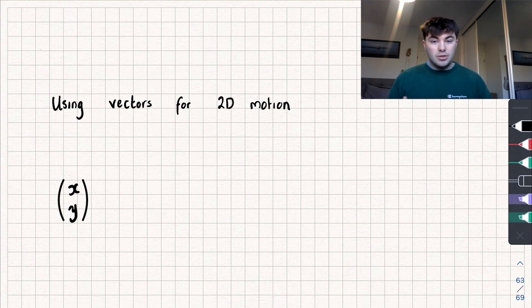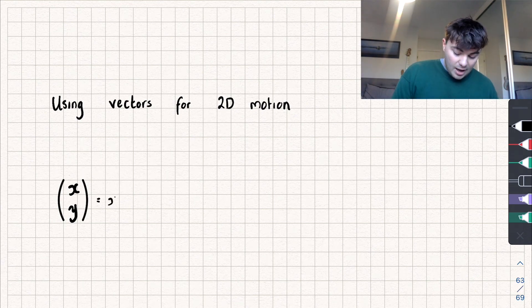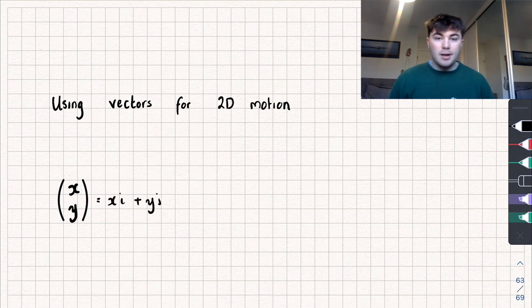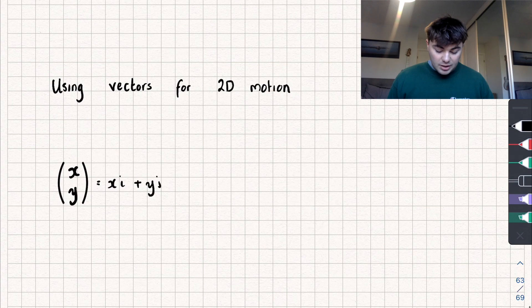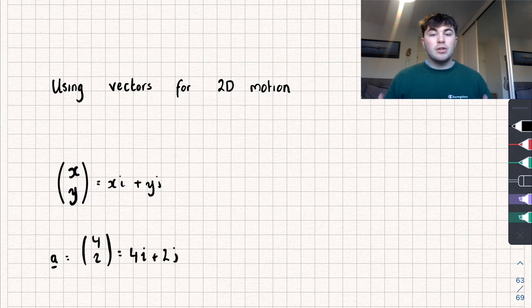We're going to start off with some notation because this comes up a lot in this topic. If we have a 2D vector, say (x, y), we could represent that in terms of the i and j unit vectors: x multiplied by i plus y multiplied by j. For example, say we had some acceleration vector a equal to (4, 2) — this could be represented as 4i plus 2j. That's just something to be familiar with because it will come up in this video.